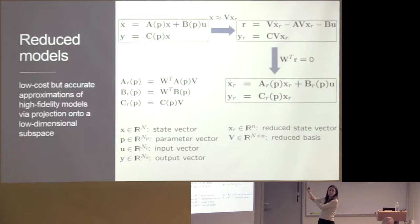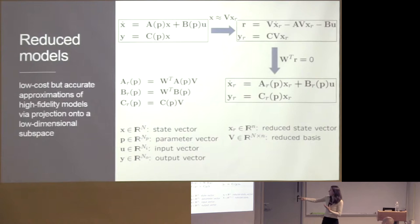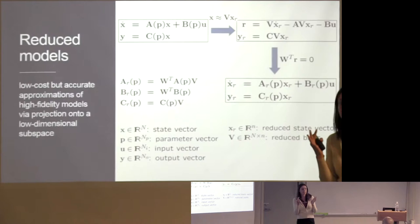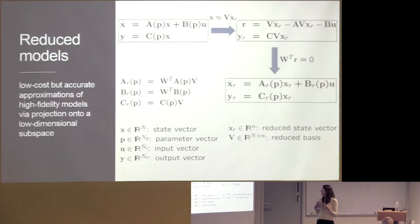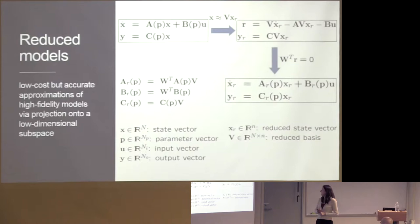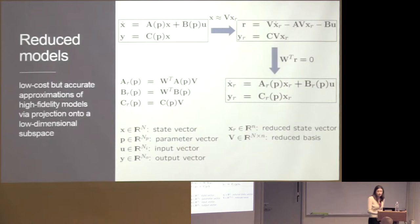The reduced-order model looks a lot like the full model but the unknowns are the much lower-dimensional vector X-reduced. We still have the same inputs U and P, and now have an approximation to the output Y-reduced. The A-reduced, B-reduced, C-reduced matrices are relatively simple projections of the original A, B, C onto the spaces defined by V and W. A very simple but powerful idea: find a low-dimensional subspace, project the equations, get a low-dimensional model. Of the many methods for identifying V and W, perhaps the most popular is the proper orthogonal decomposition — POD — which is very similar to PCA, also known as empirical orthogonal functions, and is basically SVD.